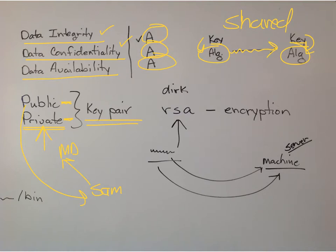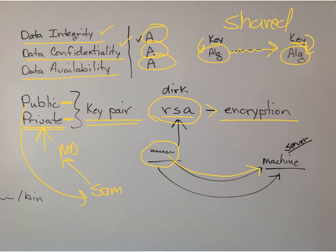We can set up a public-private key combination on our Linux machines using RSA — set it up for encryption. We can set up a public-private key here, send the public key to our server, and share that because we don't care if somebody sees it. Then when we authenticate, our private key will allow us to authenticate to the machine that has our public key in it.